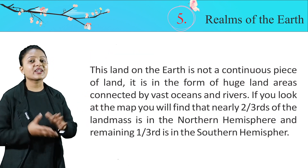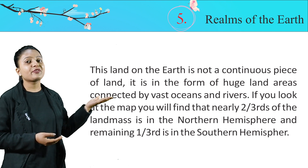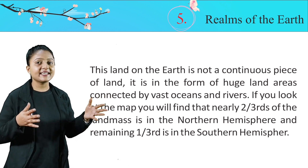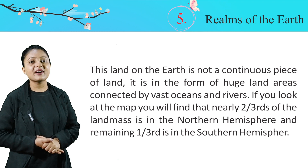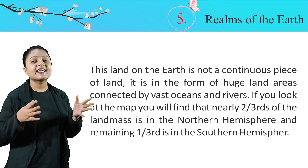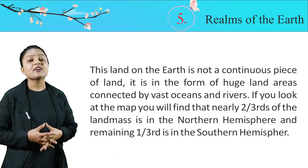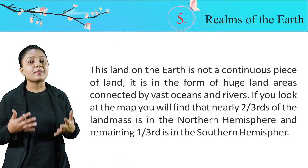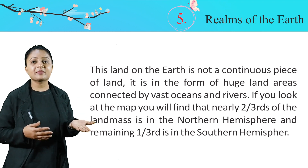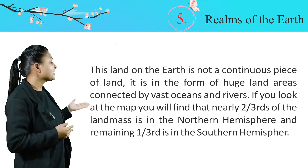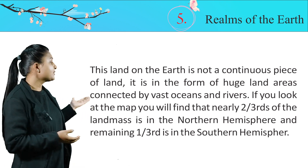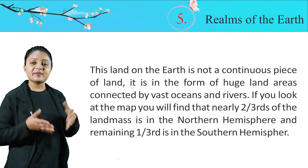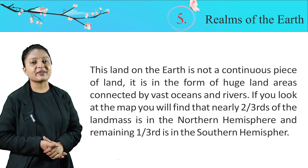This land on the earth is not a continuous piece of land. It is in the form of huge land areas connected by vast oceans and rivers. If you look at the map, you will find that nearly two-thirds of the land mass is in the northern hemisphere and the remaining one-third is in the southern hemisphere. Lithosphere wo hissa hai jo hard rocky substance hai, aur wo hissa hai jahan hum rehte hain — hamara land. Lithosphere do words se milkar bana hai: Latin word 'lithos' means rock. Is mein kai saare minerals paaye jaate hain. Lithosphere ka two-third hissa northern hemisphere mein lie karta hai, aur one-third hissa southern hemisphere mein lie karta hai.